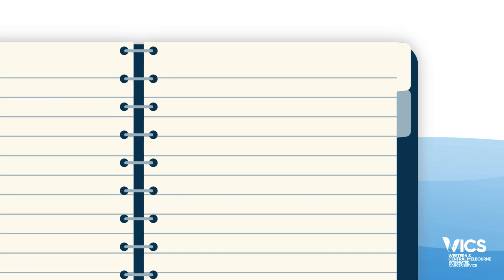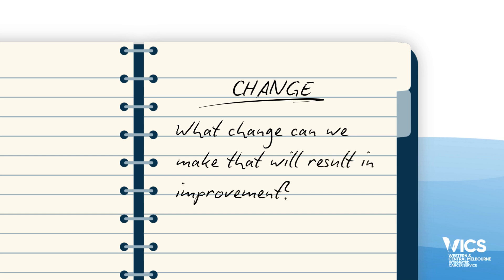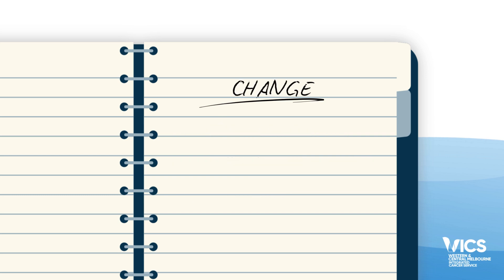Finally, question three: what change can we make that will result in improvement? Teams identify potential ideas for change. While all changes do not lead to improvement, all improvement requires change. To answer the third question in the Model for Improvement, the following approaches might be helpful.